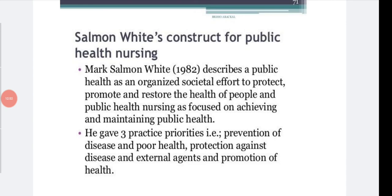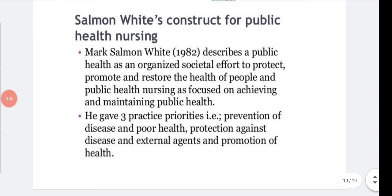Moving to Salmon White's concept for public health nursing — another theory given by Mark Salmon White — he describes public health as an organized social effort to protect, promote, and restore the health of people. He gave three practice priorities: prevention of disease and poor health, protection against disease and external agents, and promotion of health. That concludes the theories in community health nursing.